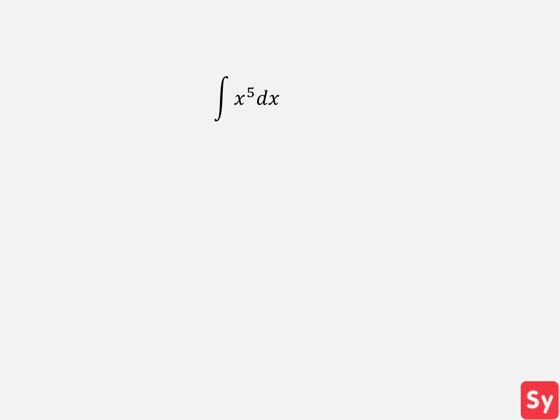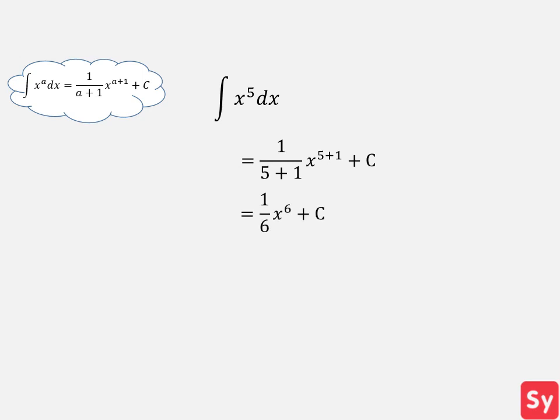Let's see an example. We have the integral of x to the fifth with respect to x. We keep in mind the power rule. So this equals 1 over 5 plus 1 times x to the 5 plus 1 plus c. We'll simplify this to 1 sixth times x to the 6 plus c.